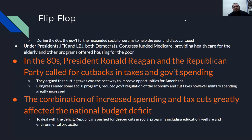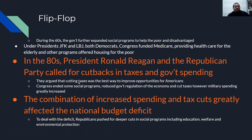During the 60s, the government further expanded social programs to help the poor and disadvantaged. Under Presidents JFK and LBJ, both Democrats, Congress funded Medicare, providing health care for the elderly and other programs offering housing for the poor. In the 1980s, President Ronald Reagan and the Republican Party called for cutbacks in taxes and government spending — major platforms of conservative Republican Party ideals. They argued that cutting taxes was the best way to improve opportunities for Americans. Congress ended some social programs, reduced government regulation of the economy, and cut taxes. However, military spending greatly increased because this was still the Cold War. The combination of increased spending and tax cuts greatly affected the national budget deficit, so Republicans pushed for deeper cuts in social programs including education, welfare, and environmental protection.